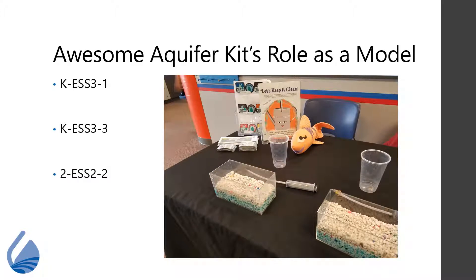The kit's role as a model allows students to visualize different types of water bodies and understand cause and effect relationships between groundwater, surface water, and the organisms and communities that use water. Once students understand the connection between groundwater and surface water, they can experiment with potential methods humans can use to reduce their impact on groundwater. The standards met by the kit's versatility as a model are K-ESS3-1, K-ESS3-3, and 2-ESS2-2.